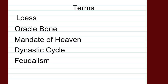We have five terms for this particular lesson: Loess, Oracle Bone, Mandate of Heaven, Dynastic Cycle, and Feudalism. Please make sure you are aware of these terms. I am going to refer to them in our lesson, and you are expected to know what they mean as I talk about them.